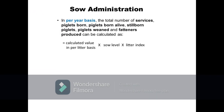Given the calculated values on a per litter basis, the total number of services, piglets born, piglets born alive, stillborn piglets, piglets weaned, and fatteners produced on a per year basis can be computed as the calculated value in per litter basis multiplied by the sow level, then multiplied by the litter index.